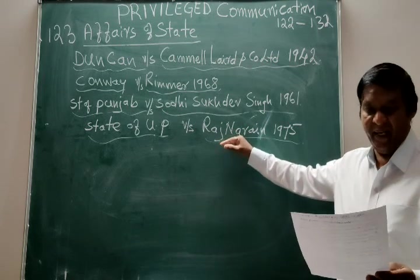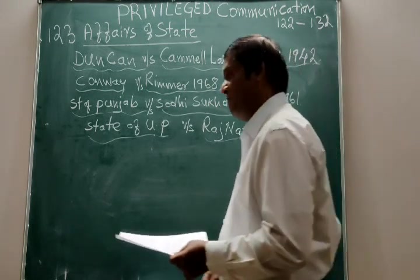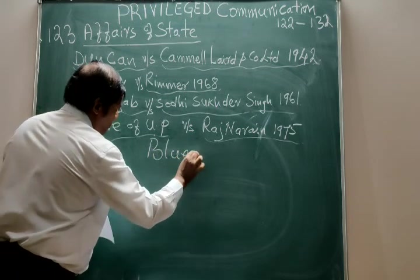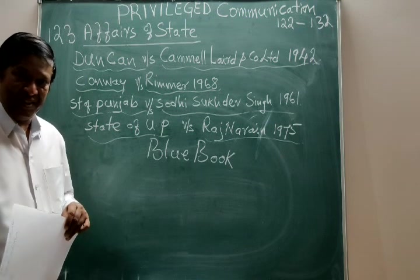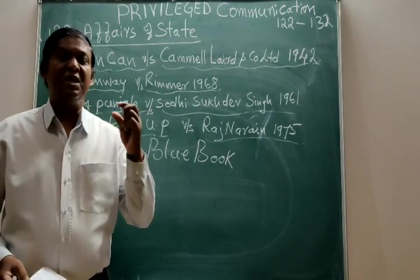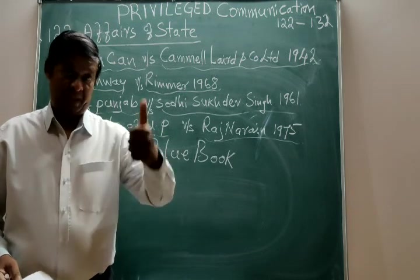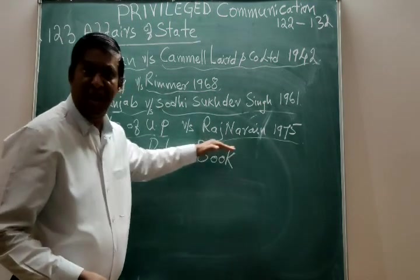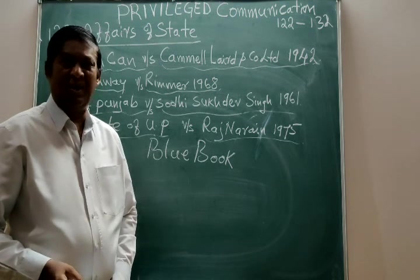The last case in this topic is State of Uttar Pradesh versus Raj Narayan, 1975. All of you know the word 'blue book.' The blue book is the book containing the security details of the Prime Minister of India and the President of India. Raj Narayan was a notorious politician, sometimes called the 'ugliest politician.'